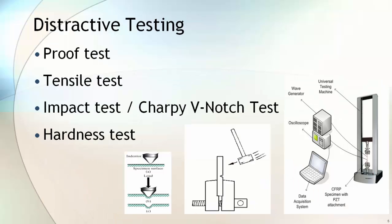Destructive testing is performed to check the strength of the body and weld of the product. Proof test is also known as type test or burst test. Manufacturers use this test to qualify the fitting design. Fittings are welded with pipe and pressurized up to the burst pressure calculated by design, or until the fitting bursts. This is a one-time test to qualify the fitting design. Other destructive tests are tensile test, impact or Charpy V-notch test, and hardness test.